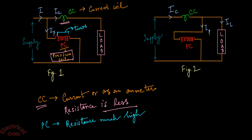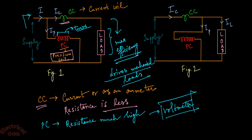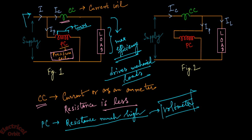Conversely, in the pressure coil the resistance is much higher, so it has a higher number of turns — similar to a voltmeter whose internal resistance is very high. This ensures very little current passes through it, because whenever we connect a load to the system we want the major part of the supply current to pass through the load for maximum efficiency. So the voltmeter or pressure coil resistance is always kept high.